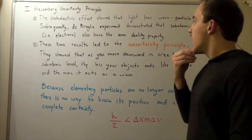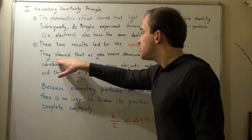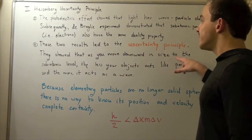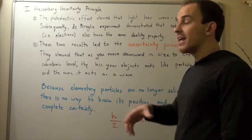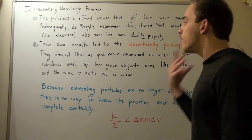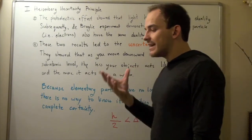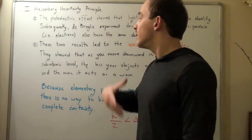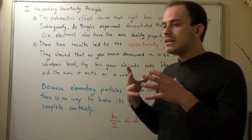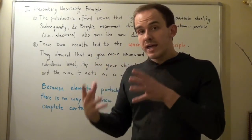What this principle showed was that as you move downward in size from something large to the subatomic level, the less your objects act like particles, and the more they act as a wave. In other words, as you get down to the subatomic level — to the electrons, protons, and neutrons — the less your objects act as solid spheres, and the more they act as waves.